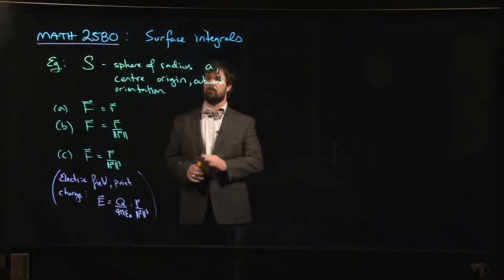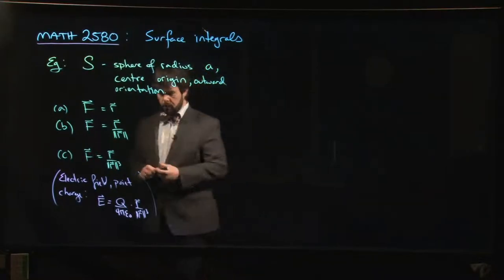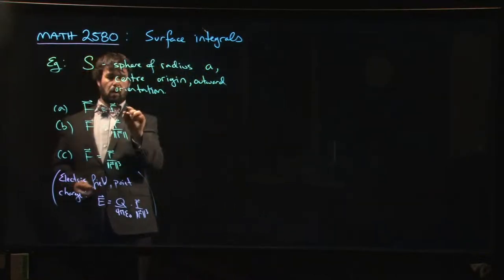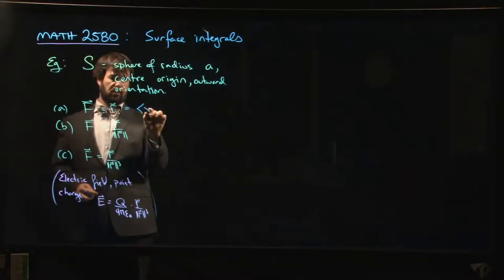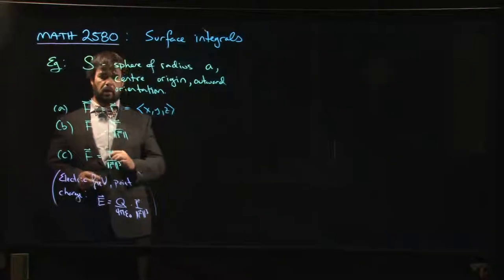We've got a sphere of radius A centered at the origin oriented outward. Now in this context, the little r is this standard radial vector: X, Y, Z.